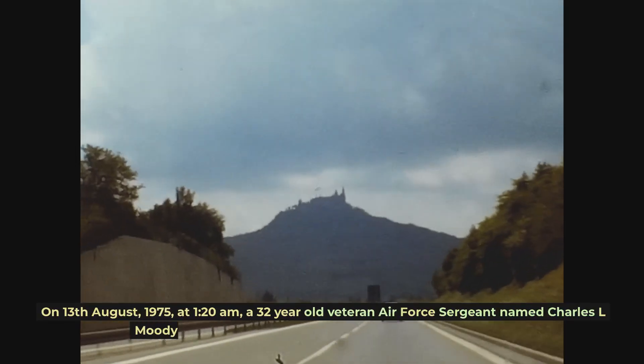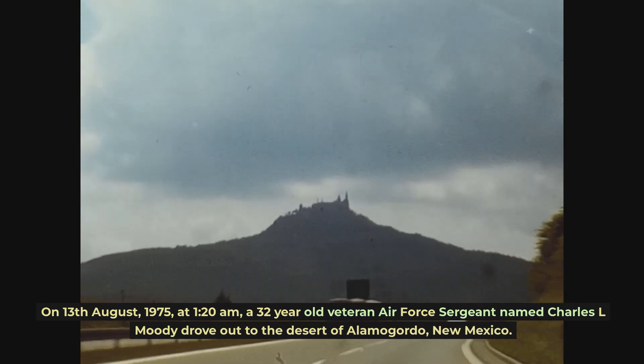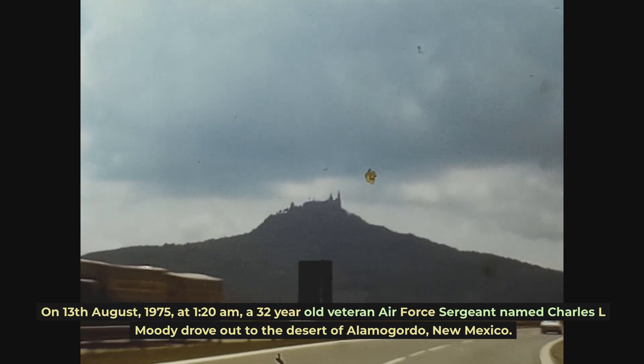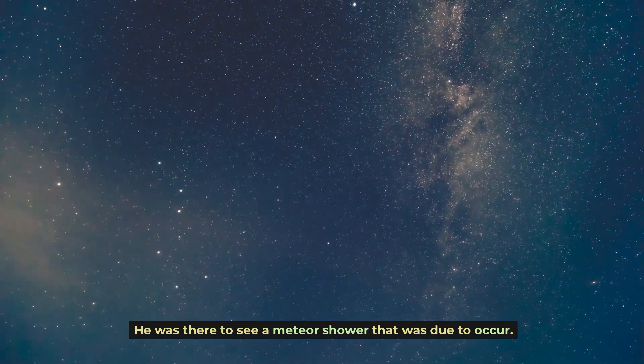On the 13th of August 1975, at 1:20 a.m., a 32-year-old veteran Air Force Sergeant named Charles L. Moody drove out to the desert of Alamogordo, New Mexico. He was there to see a meteor shower that was due to occur.